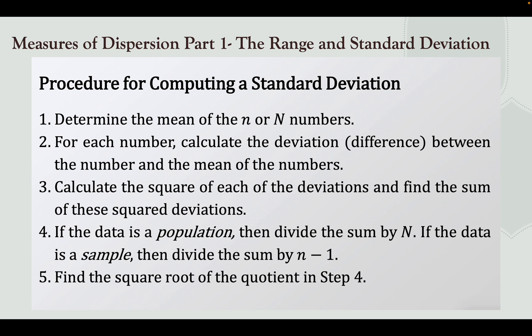Third, calculate the square of each deviation and find the sum of those squared deviations — simply raise each deviation to the power of 2. Fourth, if the data is a population, divide the sum by n; if the data is a sample, divide the sum by n minus 1. Finally, take the square root of the quotient from step 4.